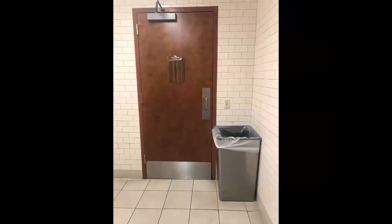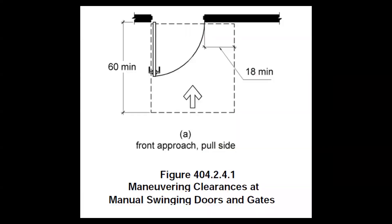A common accessibility violation is failing to maintain the required maneuvering clearance at doors. In this photo, a trash receptacle has been placed directly in the maneuvering space required at the door, making it very difficult or impossible for someone in a mobility device or wheelchair to open the door. The space is available, but it is blocked by the trash receptacle. The figure shows the two required dimensions: the 60 inches perpendicular to the doorway and the 18-inch minimum latch side clearance.